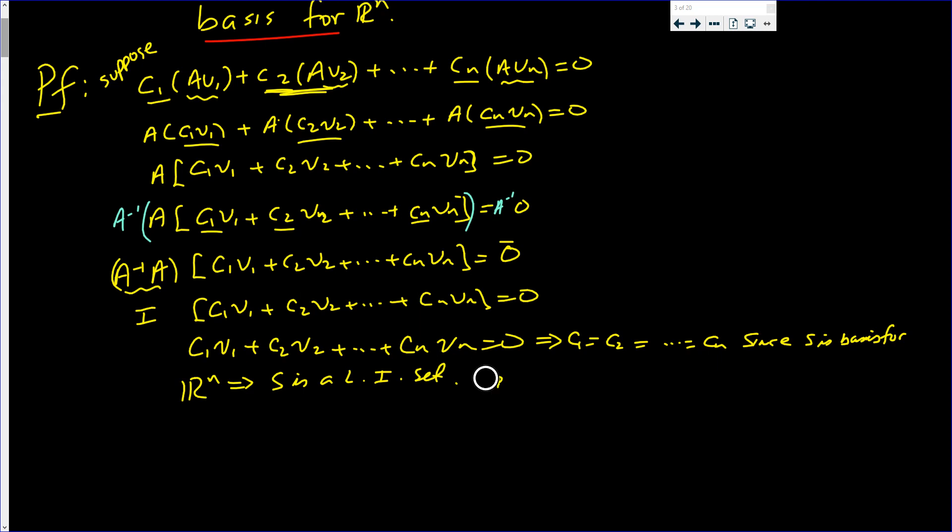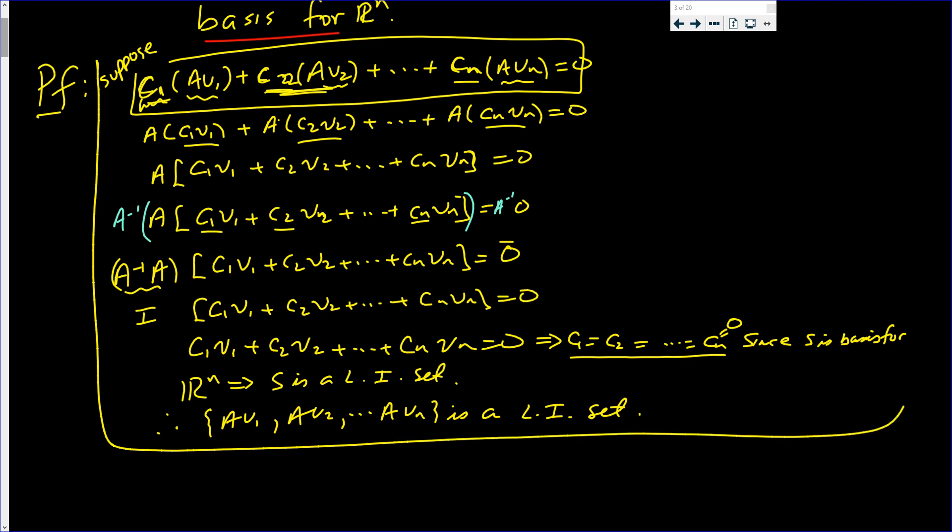So, I already said that these are zero. Therefore, since these C1, C2, all the way up to Cn are all zero. Therefore, {Av1, Av2, ..., Avn} is a linearly independent set. So, let us box this. This is half of our proof.